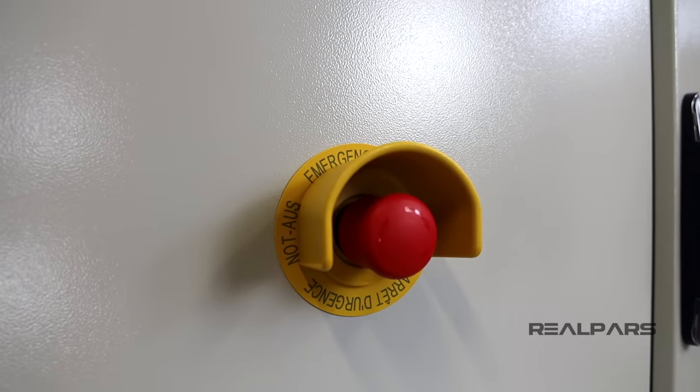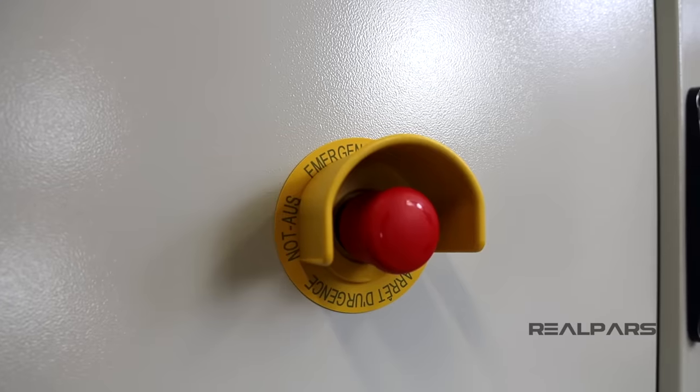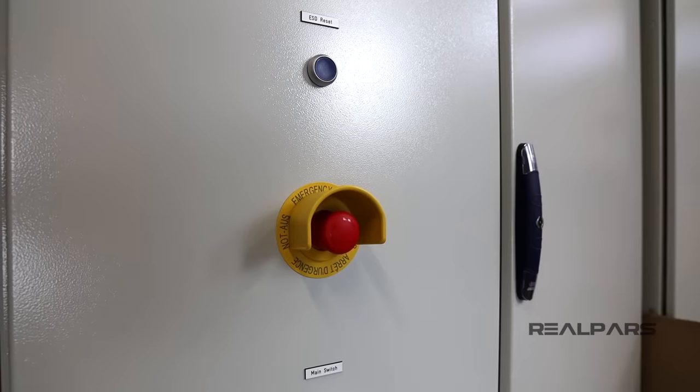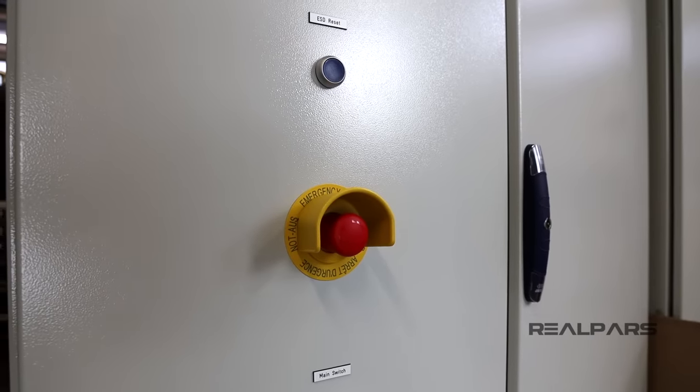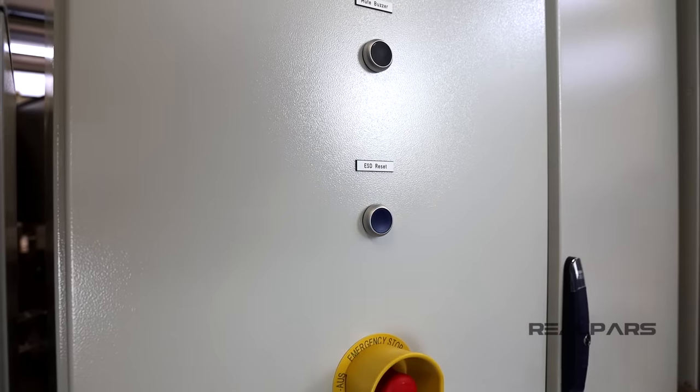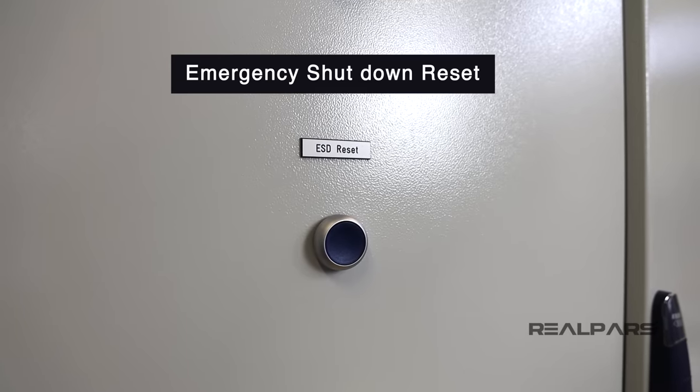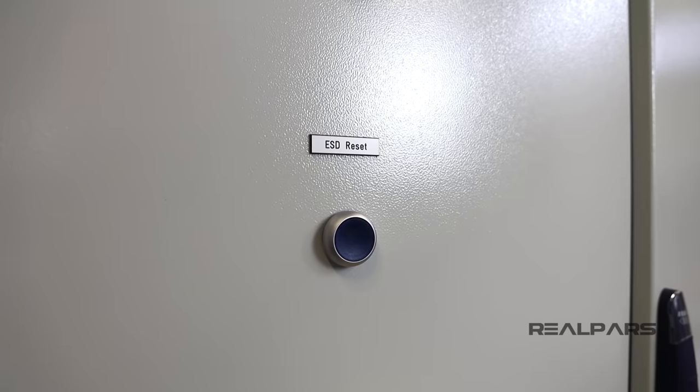Now, when you press the emergency stop switch, a red alarm indicator appears on the HMI screen. After the emergency is gone and you want to run the system again, you can press the ESD reset button, or emergency shutdown reset here to clear the alarm and the indicator on the HMI.